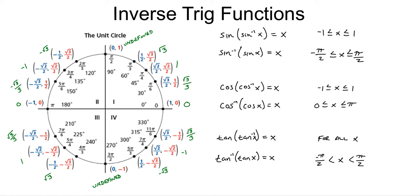A couple of other rules involve compositions — the sine of the inverse sine of x, or the inverse sine of the sine of x. Both equal x as long as x is within the restricted domain. So if x is between negative 1 and positive 1, those just cancel out and equal x. Same with the cosine: the cosine of the inverse cosine of x equals x as long as x is between negative 1 and 1. The inverse cosine of the cosine of x equals x as long as x is between 0 and pi.